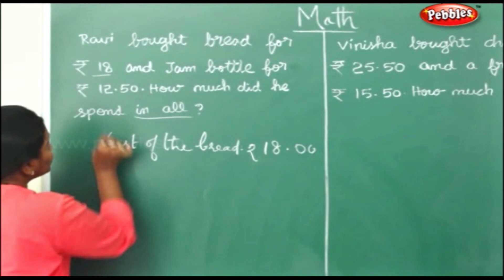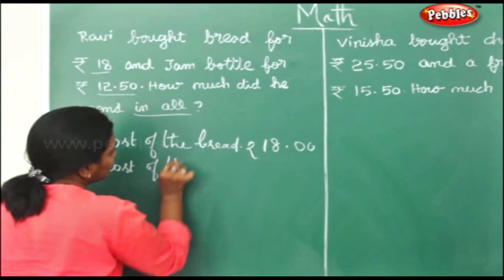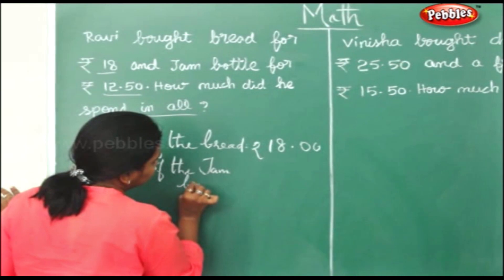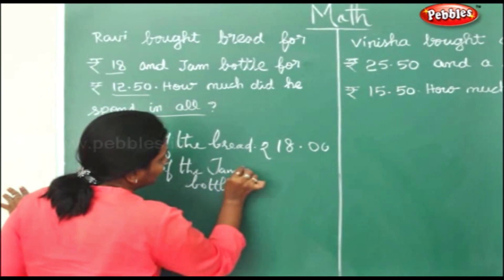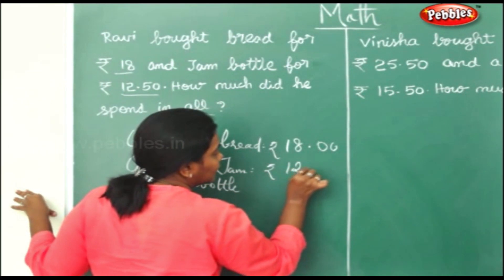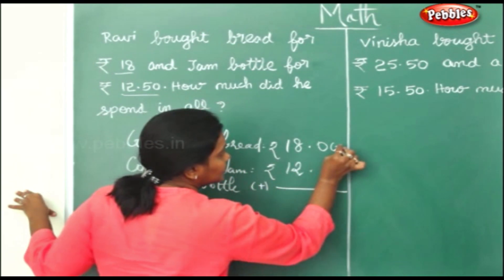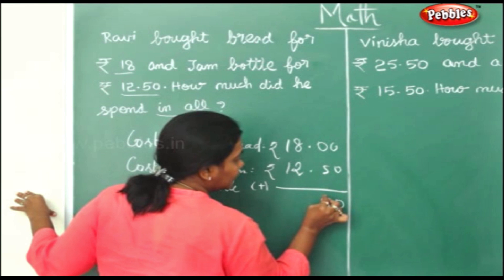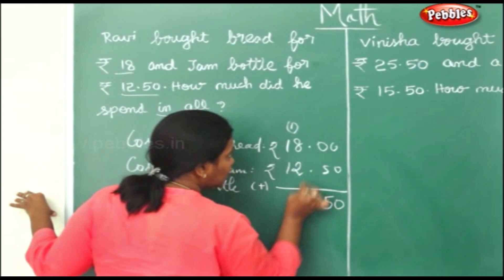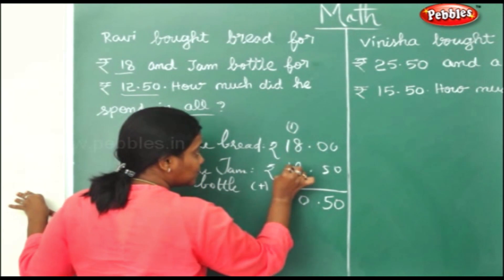Cost of the jam bottle is rupees 12.50. So we will add it up. 0 plus 0 is 0. 0 plus 5 will be 5. 8 plus 2 is 10, carry 1 on top, 0 down. 1 plus 1 is 2. 2 plus 1 is 3.